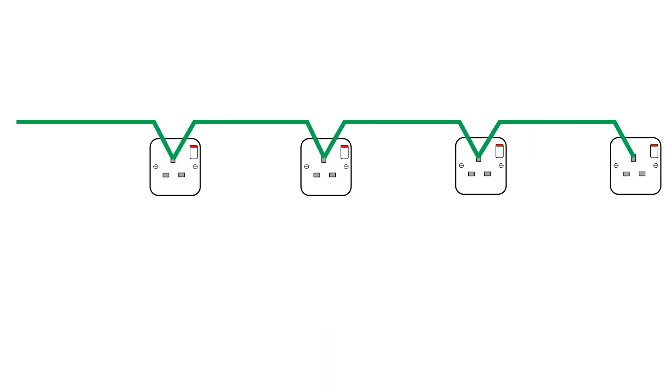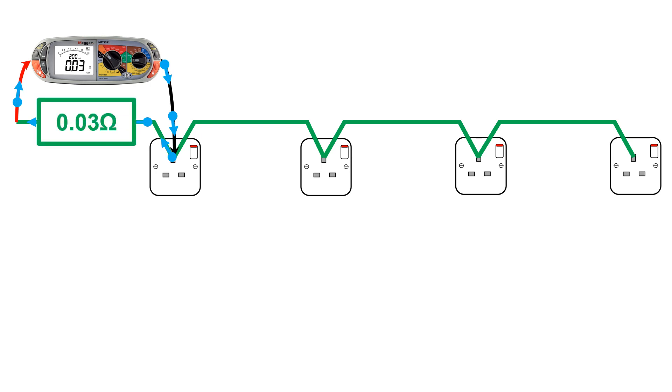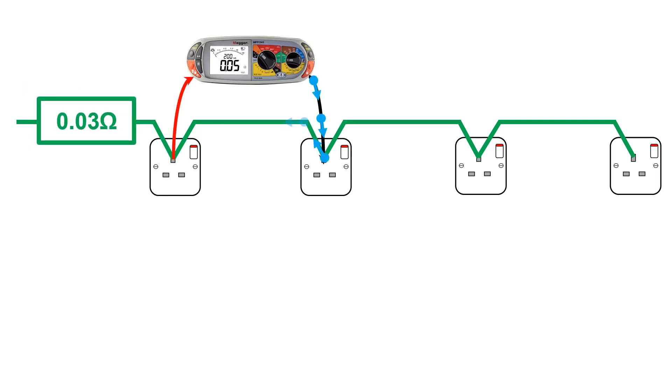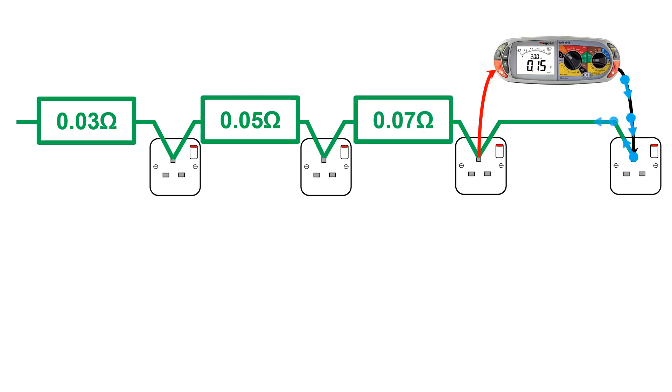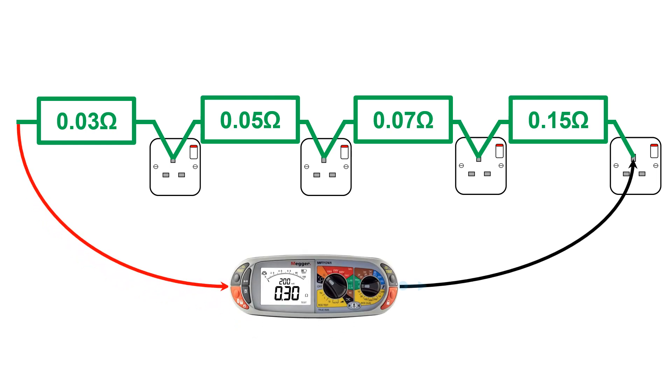Consider a radial circuit. While you are testing the circuit and proving continuity of your CPC, if you recorded the individual resistances between each socket, you could add them all up to calculate your resistance total. Let's say that our first resistance reading between the fuse board and the first socket was 0.3 ohms. The resistance between socket one and socket two was 0.05 ohms. Between socket three and socket two was 0.07 ohms. And finally, the resistance between socket three and socket four was 0.15 ohms. Combined,